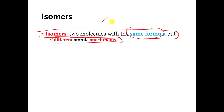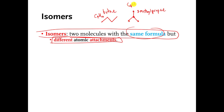One of the examples I gave was butane and this other molecule here. This is butane. The formula for this molecule is C4H10. This molecule here is called 2-methylpropane and it is also C4H10. But the atoms are attached in different ways, so these two molecules are isomers of each other.